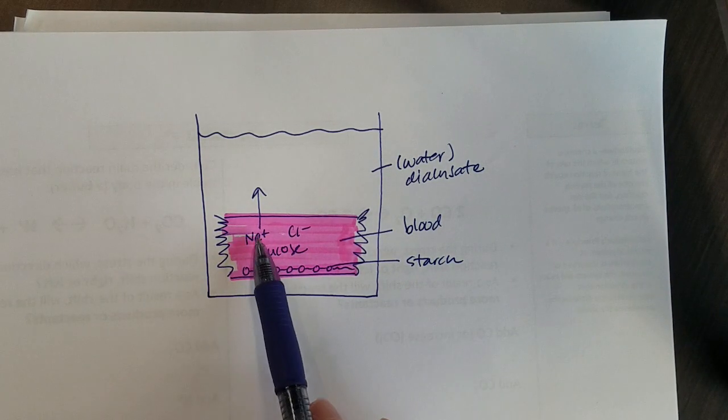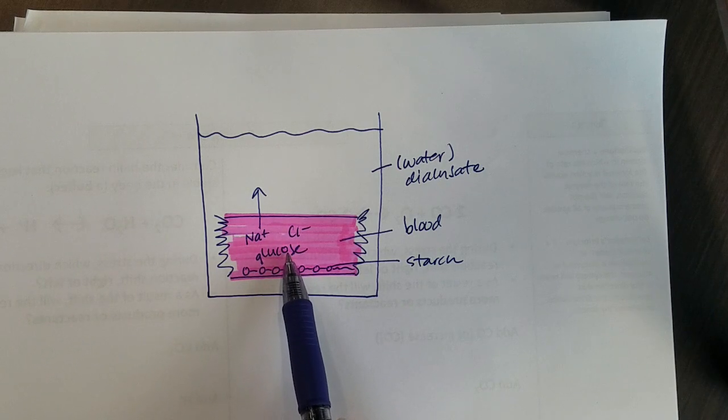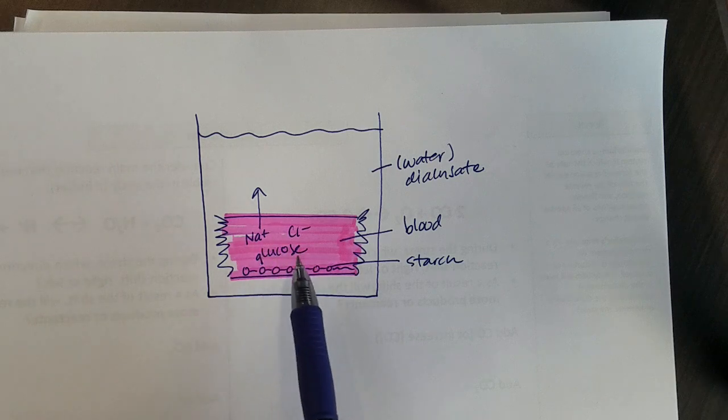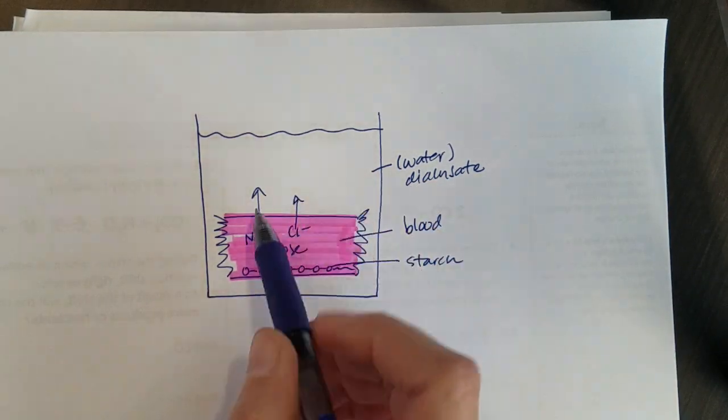One of the things you clean out in dialysis is salt. You don't want to lose much glucose during dialysis, so we'll be looking at which of those moves across this membrane.